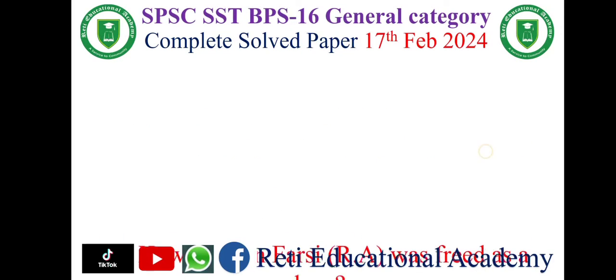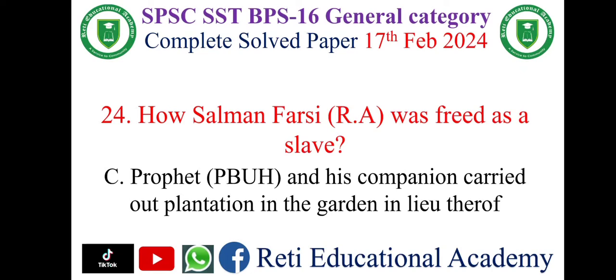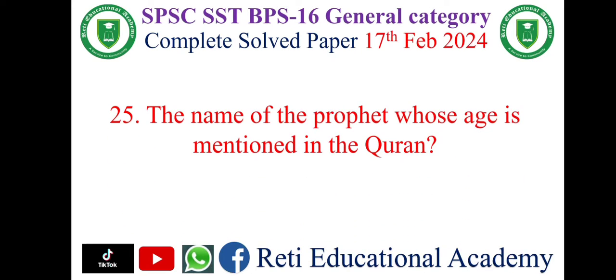Question number 24: How was Salman Farsi freed as a slave? The correct answer is C — the Prophet (peace be upon him) and his companions carried out plantation in a garden in lieu thereof. Question number 25: What is the name of the prophet whose age is mentioned in the Holy Quran? The correct answer is B.